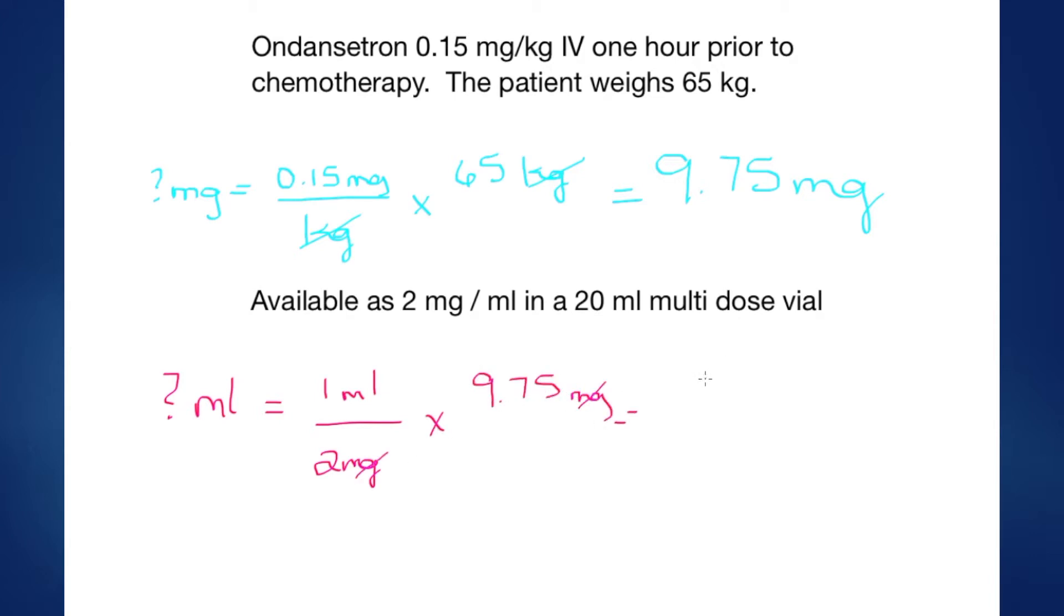I know that it is available as 1 ml equals 2 milligrams and I need 9.75 milligrams for a dose. Again dimensional analysis, cross off your milligrams and we're going to do this calculation and I quickly learned that what I need is 4.875 mls. Now don't forget your rounding rules. Rounding rules mean if it's greater than 0.5 we round up so we're going to need 4.9 mls.